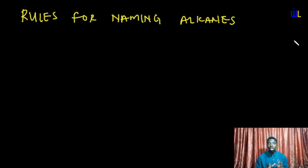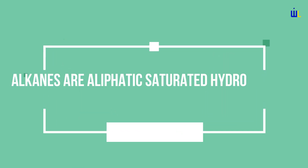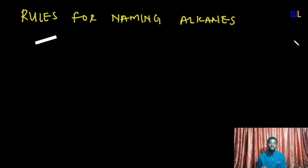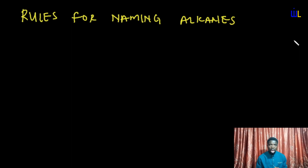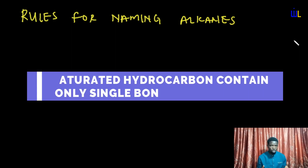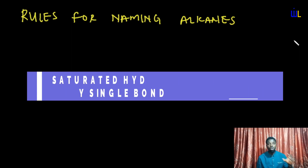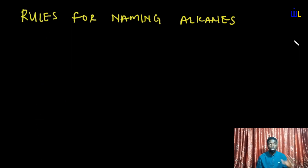The first thing I'd like to describe before we come to naming alkanes is the term 'alkanes.' Alkanes are aliphatic saturated hydrocarbons — a group of organic compounds that contain only hydrogen and carbon and only possess single bonds.